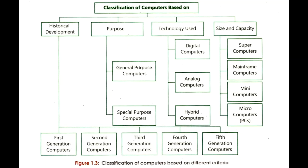On the basis of historical development, a computer system can be classified into five categories: first generation computer, second generation computer, third generation computer, fourth generation computer, and fifth generation computer.